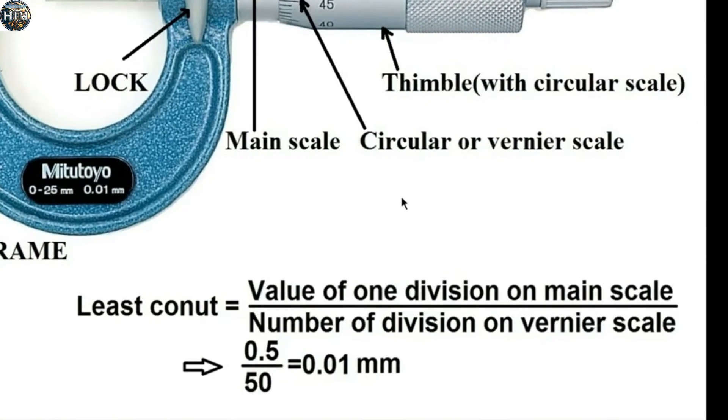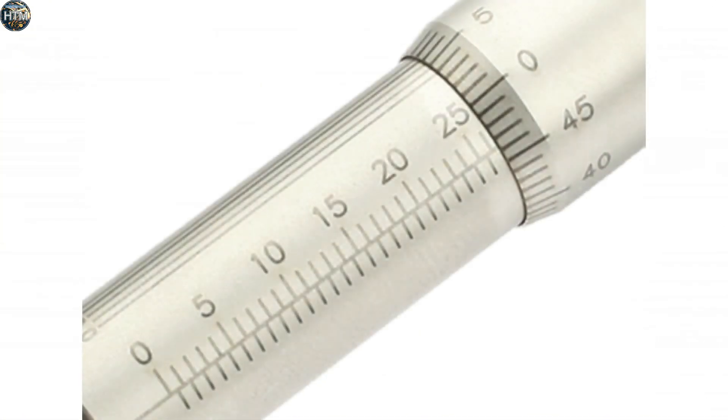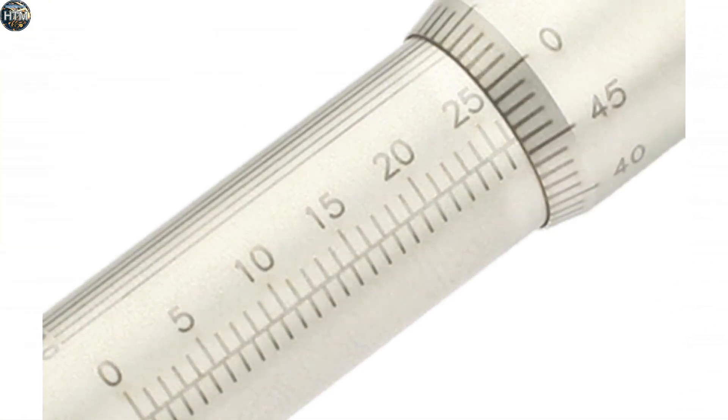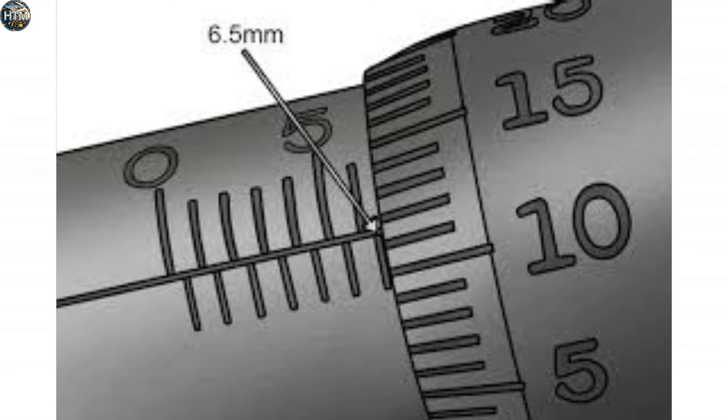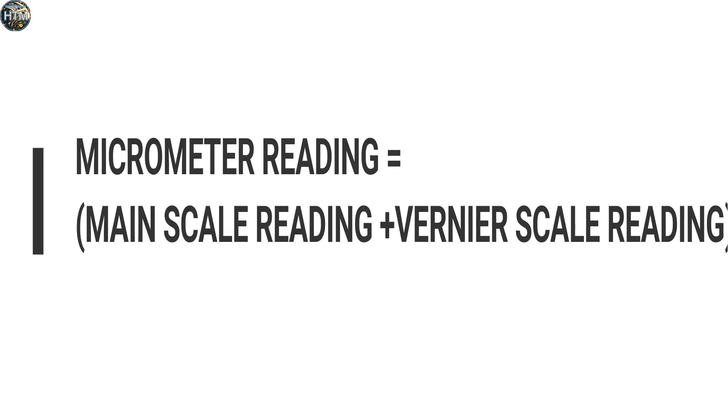Now to read the micrometer reading, check which line is showing left side close to the thimble edge, and check which thimble line is matching with the datum line or below the datum line. The addition of all will give you the total reading or thickness of the particular material.